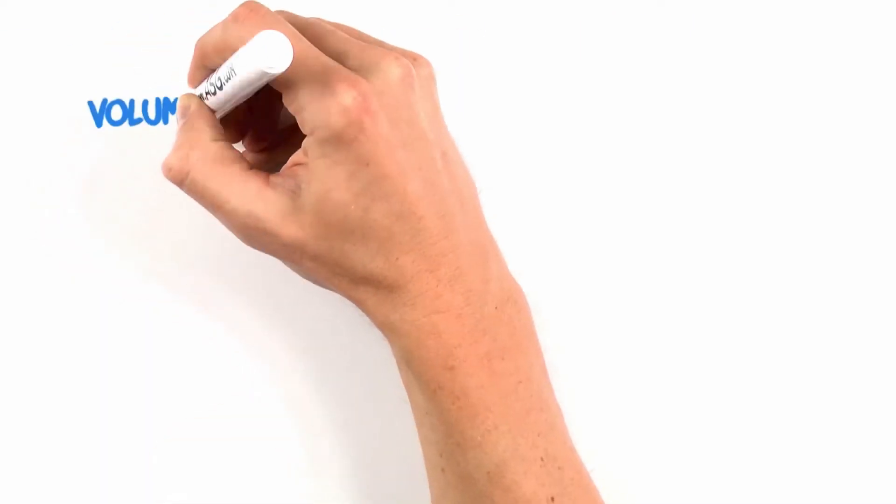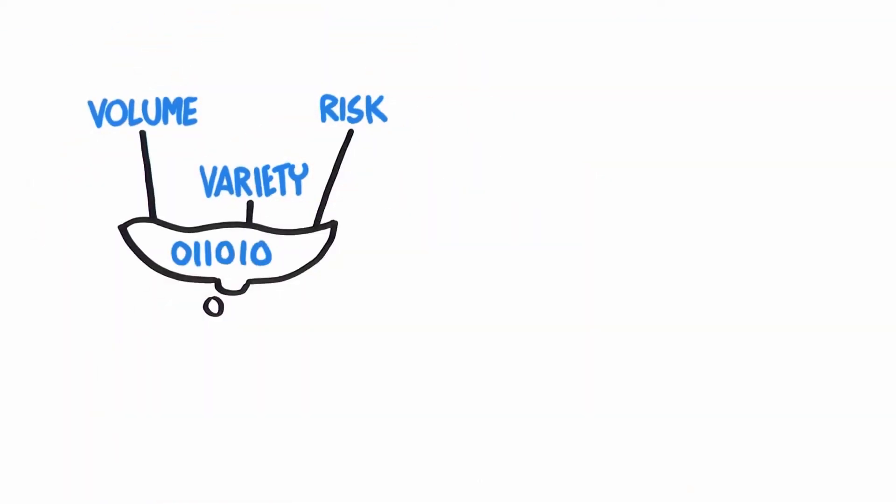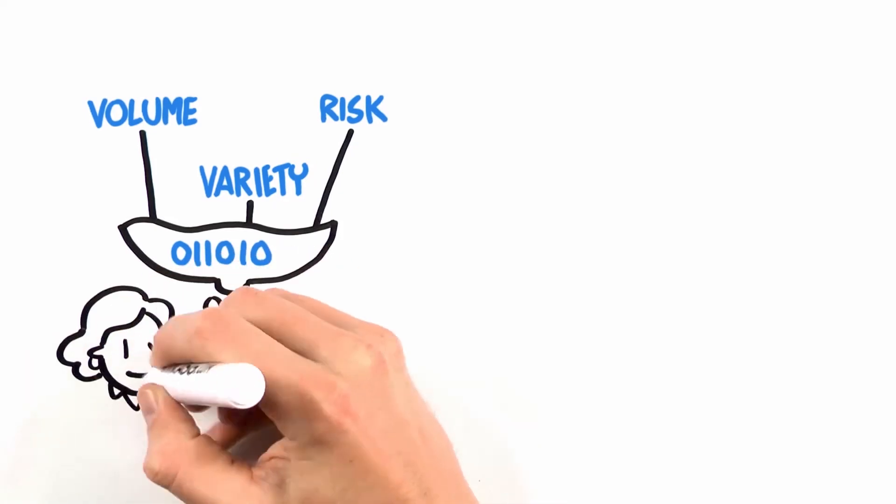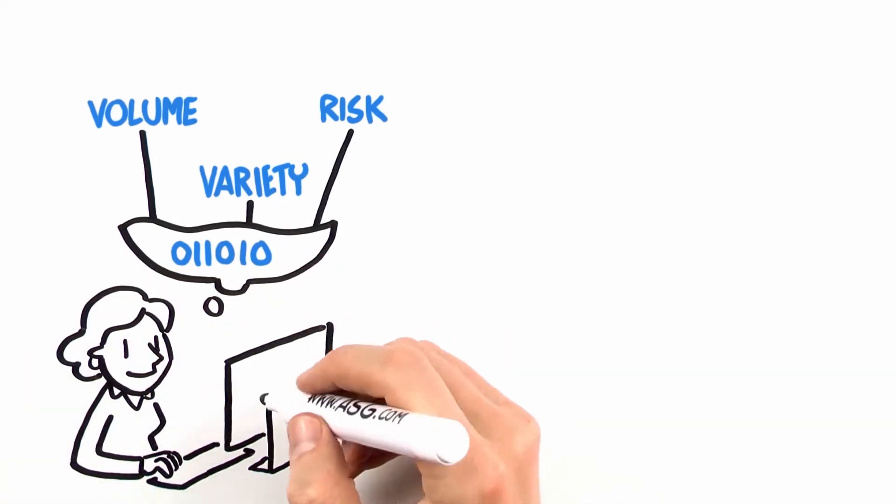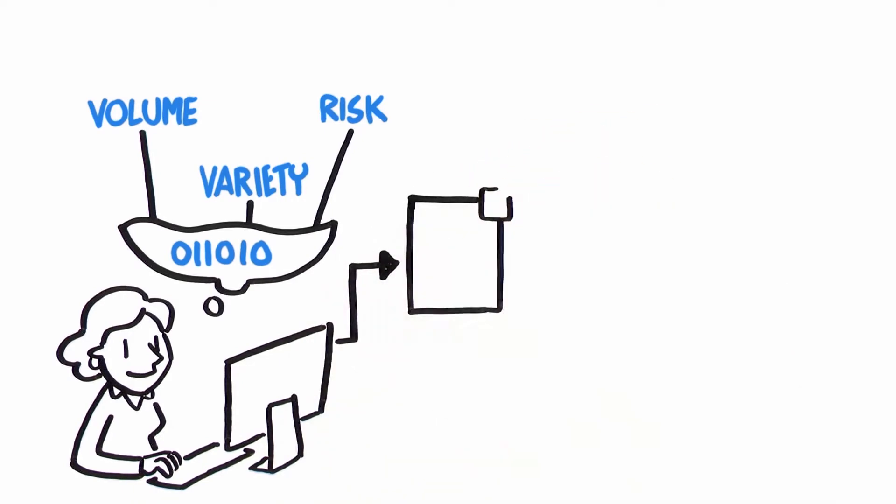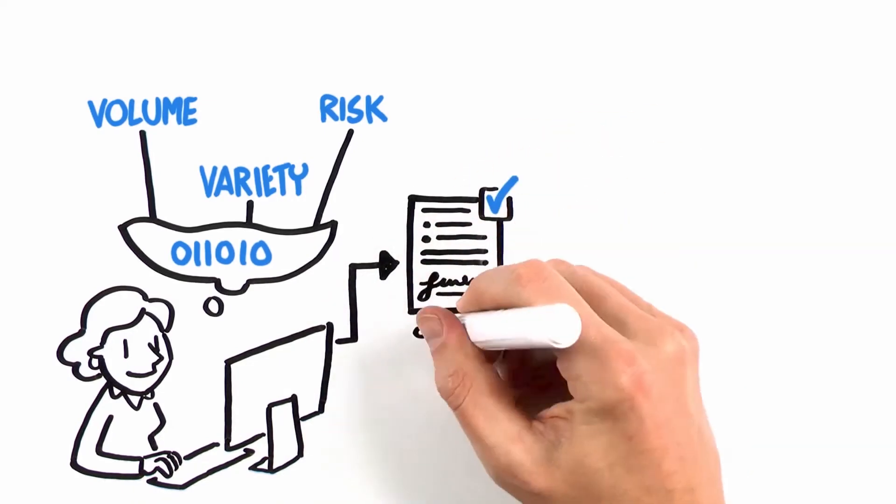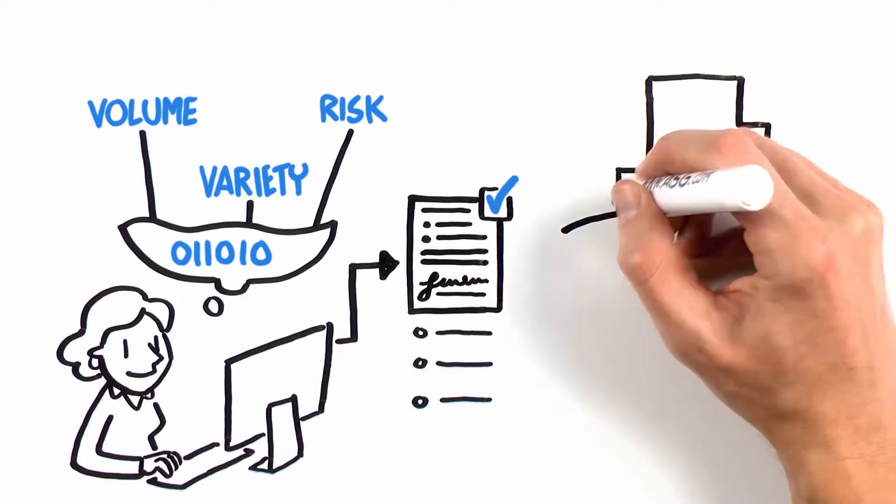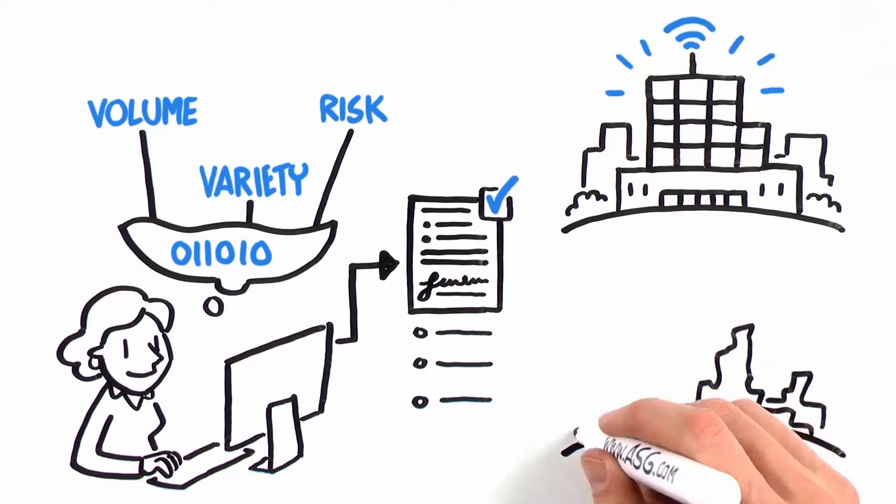Despite the volume, variety, and risks of data, leadership at Chris's company knows that when staff members understand their data and know how much they can trust it, the insights they gain drive better, faster business decisions. This can be the difference between market leadership and disaster.